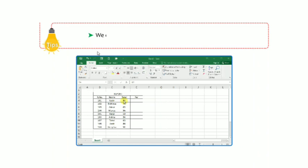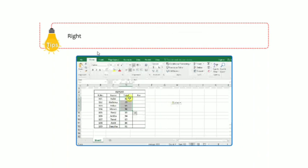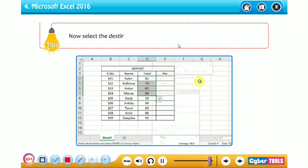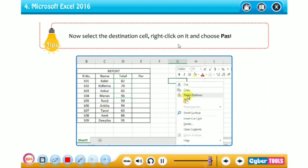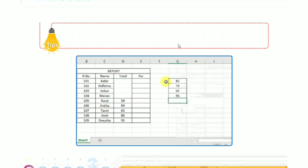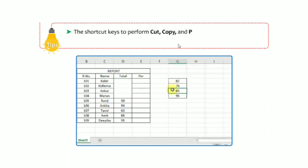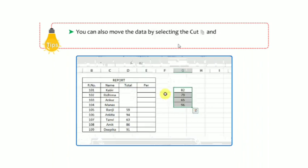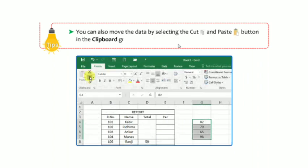You can also move data using the shortcut menu: right-click on the cell to open the shortcut menu and select the Cut option. Select the destination cell, right-click and choose the Paste option. The shortcut keys to perform cut, copy, and paste operations are Ctrl+X, Ctrl+C, and Ctrl+V respectively. You can also move data by selecting the Cut and Paste buttons in the Clipboard group.